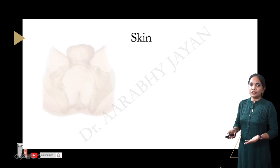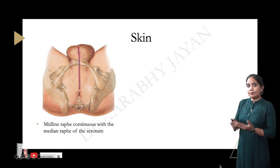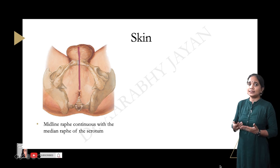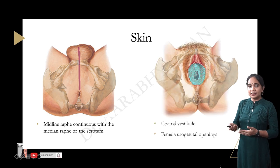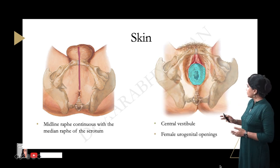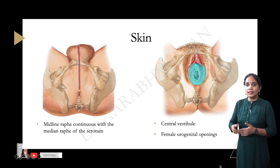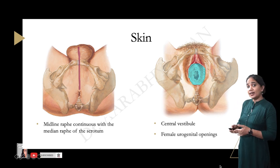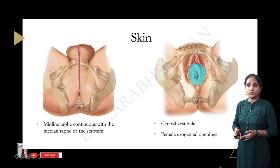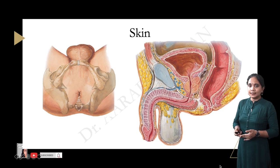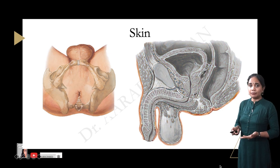In the male perineal region, the skin has a midline raphe, which signifies that the organs there are developed from two symmetrical halves. The median midline raphe of the male continues as the median raphe of the scrotum. In females, there is a central cleft called the vestibule, which lodges the urethra and the vagina.